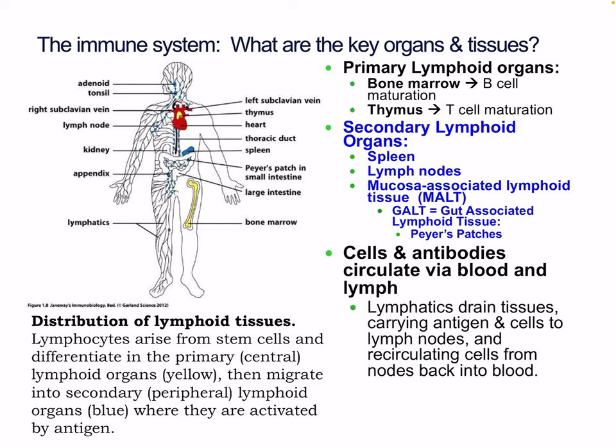Key organs and tissues. Primary lymphoid organs include the bone marrow, where B cells develop, and the thymus, where T cells mature — easy to remember as T to thymus, B to bone marrow. Secondary lymphoid organs include the spleen, the lymph nodes, and the mucosa-associated lymphoid tissue (MALT). We also have the gut-associated lymphoid tissue (GALT), which includes Peyer's patches, which we'll discuss later.